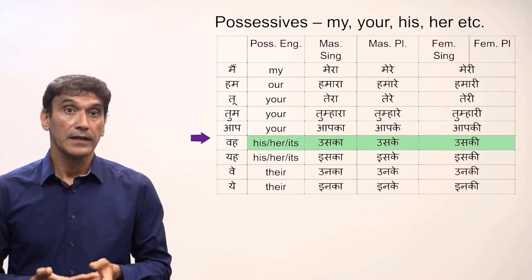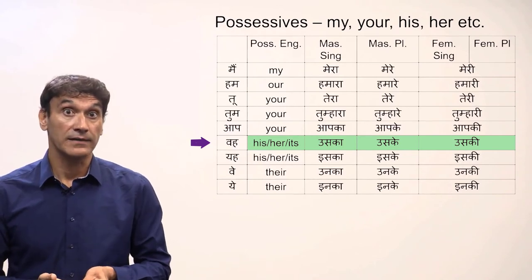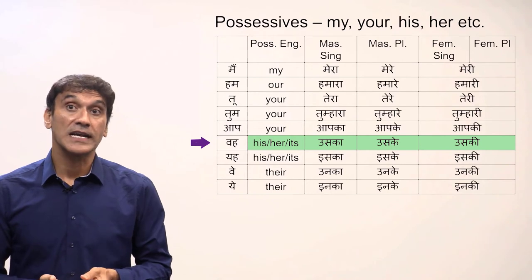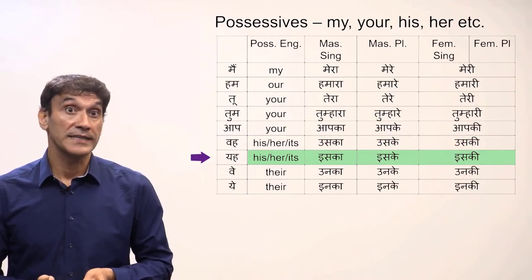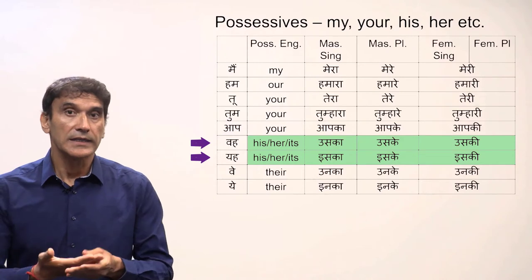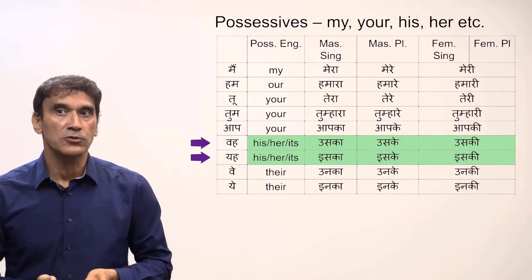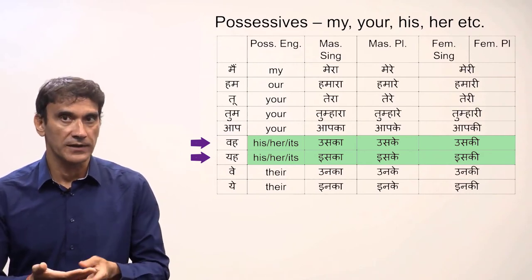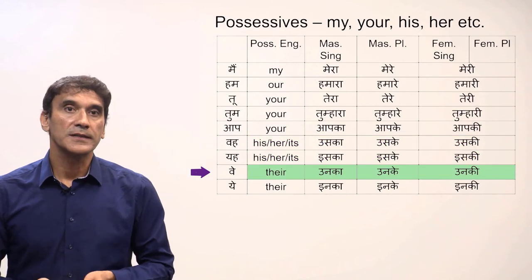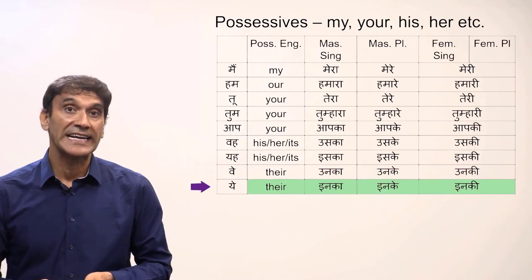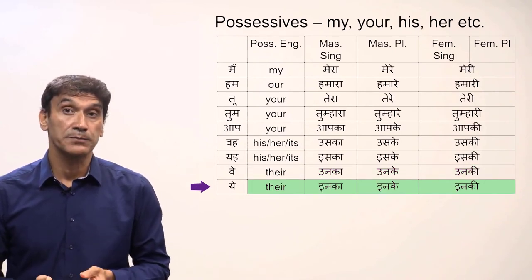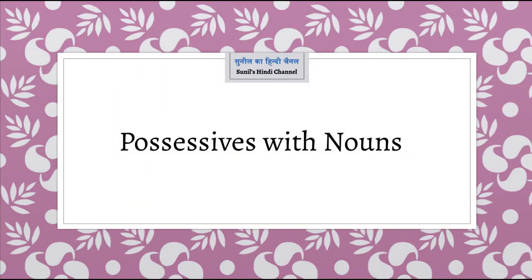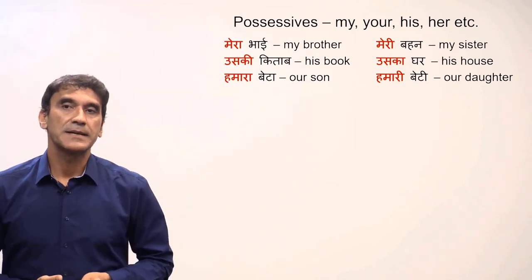The third person forms in English are his, her, its. The Hindi possessives are uska, uske, uski. There is also another form: iska, iske, iski. The difference between these two forms is based on proximity to the speaker — iska is used for someone close to the speaker, and uska for someone far away. For the third person plural, the English form is 'their'. The Hindi forms are unka, unke, unki, or inka, inke, inki — again, the difference is based on proximity to the speaker.